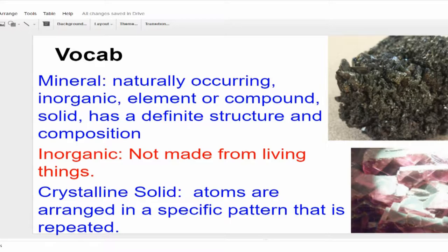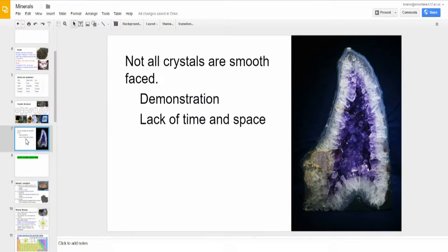Crystalline means those atoms are arranged in specific patterns that are repeated. Just like your salt crystal lab — the labs that turned out great are the ones with big salt crystals. They formed in specific patterns and should all be cubical. Crystals tend to run together if they lack space, so the bigger the crystal, the more space it had to grow into, and also time — the longer the time, the bigger those crystals can actually get.